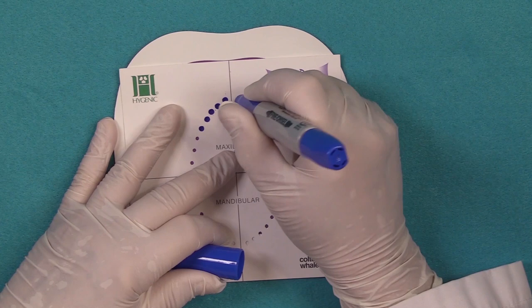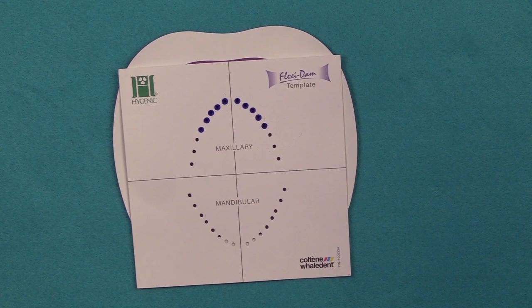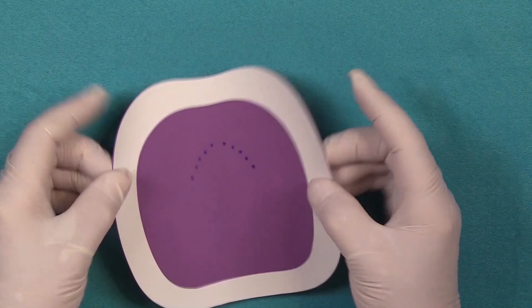All we're going to do here is isolate from bicuspid-to-bicuspid. Let's say we're doing some anterior restorations and we don't need to use a clamp. That's the nice thing about using wedged cord. Now that we have it all marked we're going to punch it. I already checked our dentition and our mannequin has perfect dentition, so I'm going to punch these to correspond to the teeth that we're isolating.